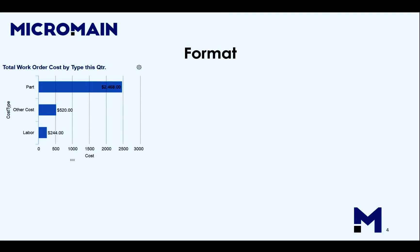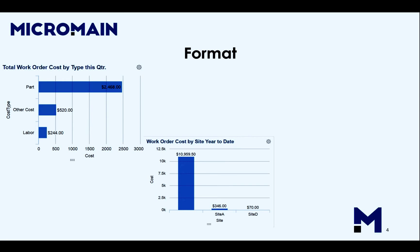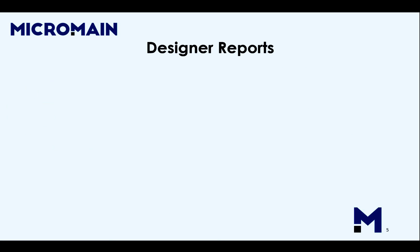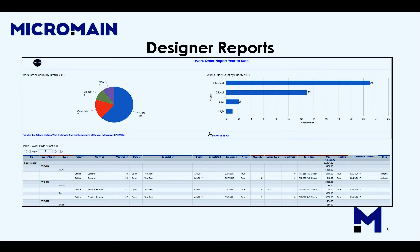Reports can be displayed in a table format as well as graphically. In the middle we have work order cost by site year-to-date. This is an example of a company-wide report which gives insight into your team's performance relative to your other sites. Your customizable reports can combine tabular and graphical reports together in one location.